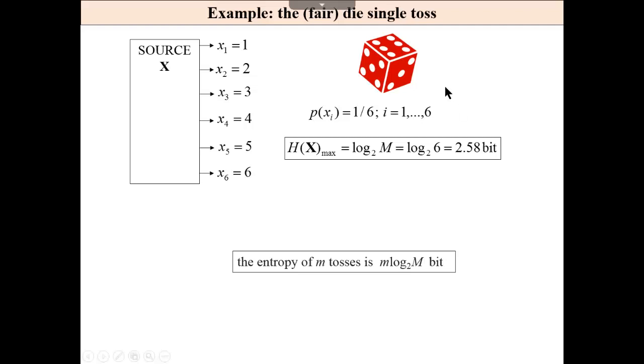For example, the fair die single toss, six equally probable results, which means that we have the entropy 2.58, which means that for this experiment, the entropy is 2.5 times larger than entropy that we have obtained from the experiment coin single toss. The entropy of m tosses of this die will be m times larger.